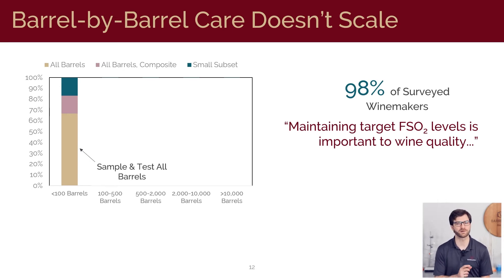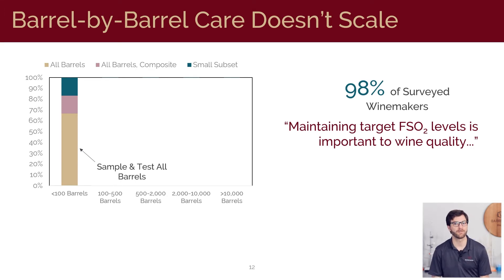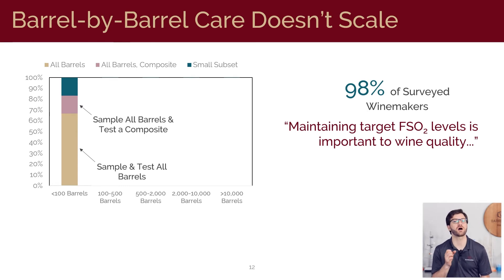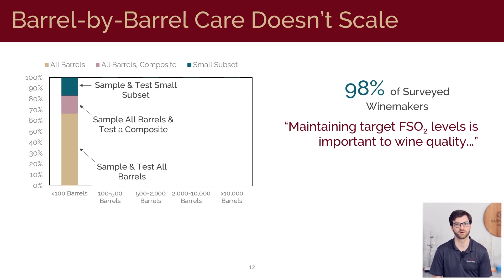For really small wineries with less than 100 barrels, the majority of the respondents reported that they actually take samples from every single barrel and measure these samples separately to determine free SO2. Some winemakers in this group also sampled all of the barrels but measured just a composite of these samples blended together, while the remaining winemakers sampled and measured only a small subset of the barrels within each group.